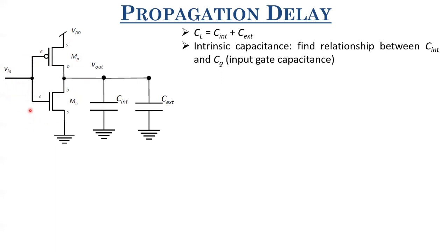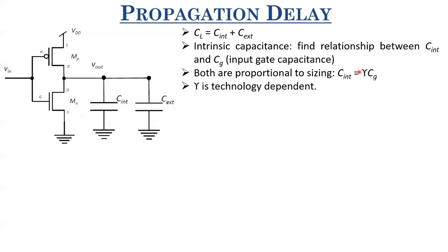Since both C_int and CG are dependent upon width, there can be a relation between them. Empirically, by looking at measurement results, what people found is that C_int can be related to CG - the input gate capacitance - as C_int = γ·CG, where γ is a technology-dependent parameter. Typically for sub-micron or advanced CMOS technologies, γ is pretty close to five. So we are trying to find out the relationship between C_int and CG to express the capacitance at the output node in terms of the input capacitance. That's the main goal.